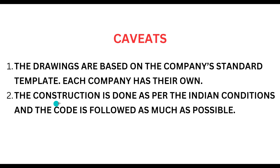The second point is this: the construction is done as per Indian conditions. The project we are about to show you was constructed in Bangalore. We have fantastic soil here in Bangalore, and our G plus 2 structure was constructed at a depth of 1.5 meters. That may not be the case for your site condition — it varies. If you have black cotton soil, then instead of going for isolated footing you might have to go for combined footing even for a G plus 2 structure. So you have to get your soil tested before deciding on footing sizes.